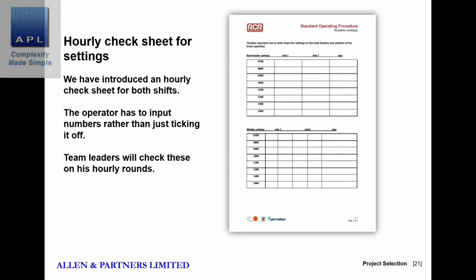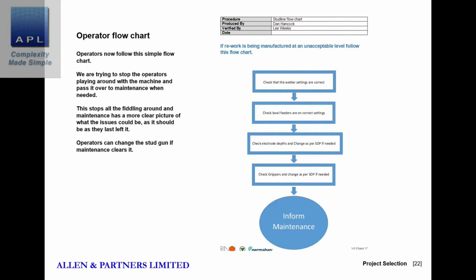There's an hourly check sheet to make sure operators are actually following procedures. Importantly, they get the operator to write the actual number — 530 amps, or whatever the setting is — rather than just ticking a box. If you ask for a tick, operators will tick it without really checking. If you make them write the number, they have to physically confirm the value and they will always adhere to the standard. It's a nice psychological way of keeping operators honest.